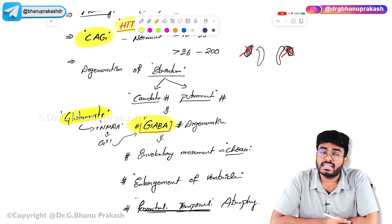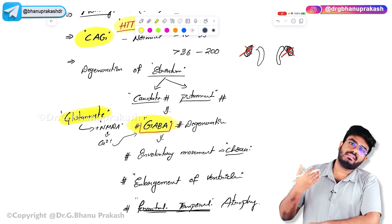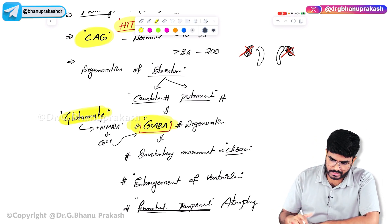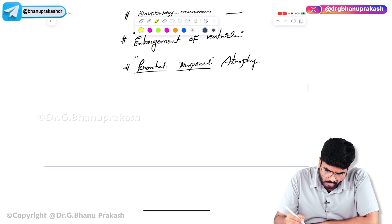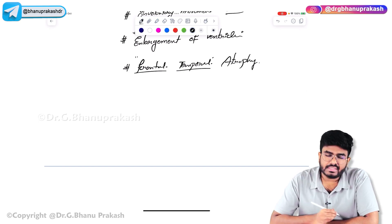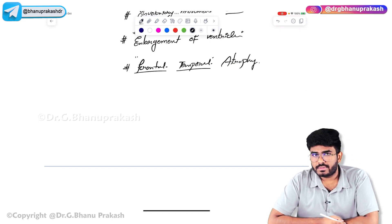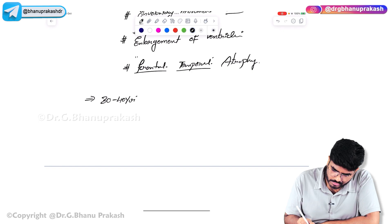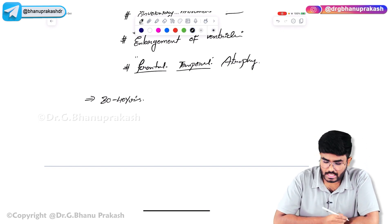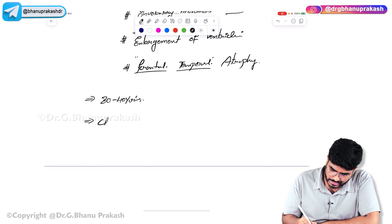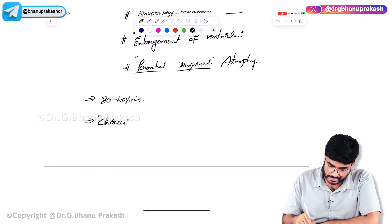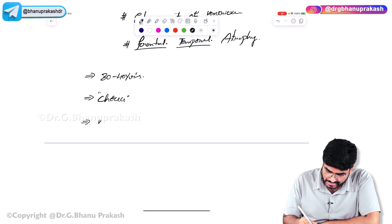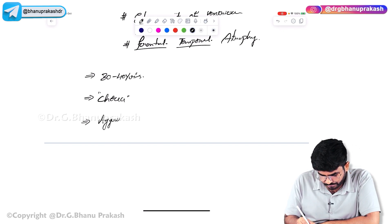GABA going down leads to unnecessary movements — chorea. These patients typically present between 30 to 40 years of age. Symptoms include chorea — involuntary movements — as well as aggression.